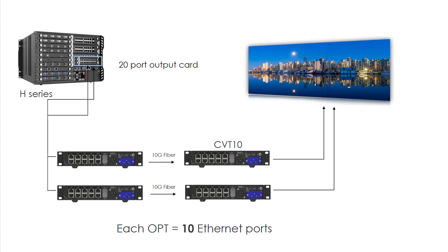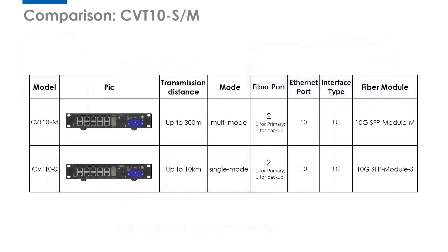Now let's see the details of CVT10. It has two models: CVT10-M and CVT10-S. Just like CVT4K, the main difference is transmission distance. CVT10-M's transmission distance is up to 300 meters. For CVT10-S, it is up to 10 kilometers. CVT10-M is multi-mode and CVT10-S is single mode. For both models, the fiber ports are 2 and the Ethernet ports are 10. Here is the fiber module for reference.